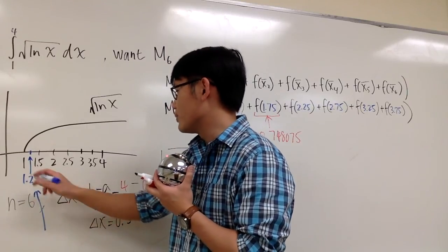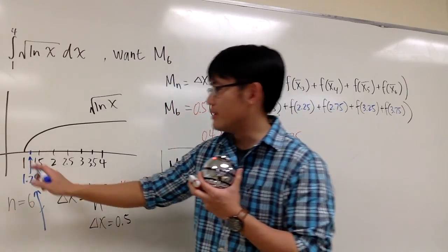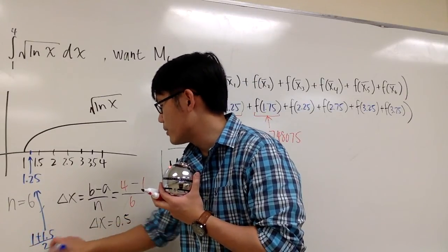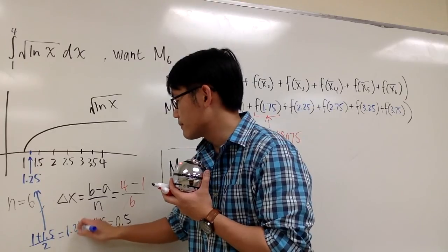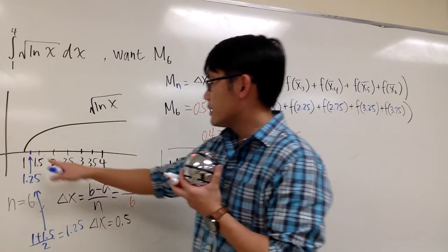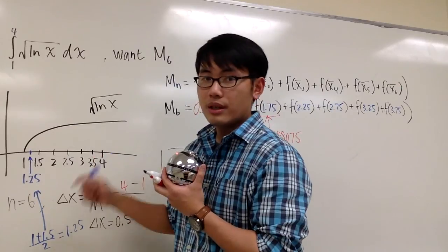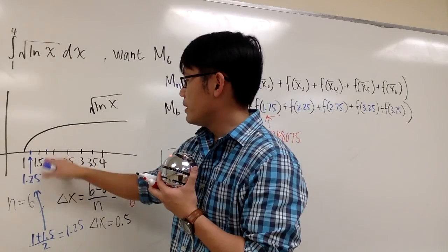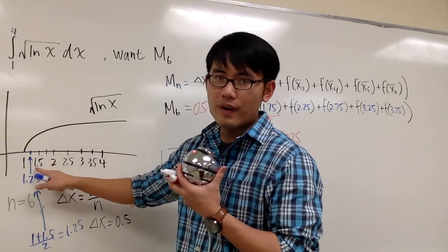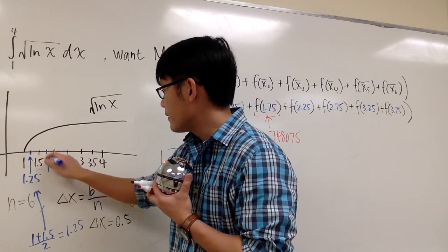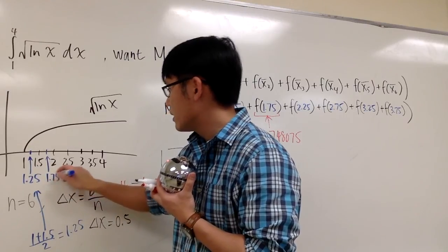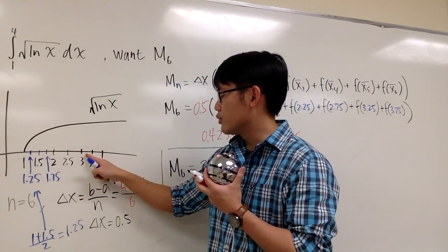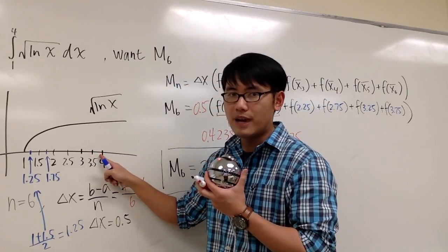Anyways, I have to figure out the middle numbers. The first one is going to be 1.25, and this one is going to be the number in between 1.5 and 2, and that's 1.75. And then the next one is going to be 2.25, 2.75, 3.25, and 3.75. And this is how we are going to draw the rectangles.